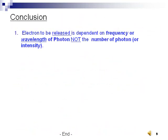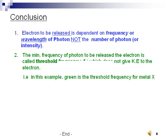This story concludes that: 1. Electron to be released is dependent on frequency or wavelength of photon, not the number of photons. 2. The minimum frequency of photon to release the electron is called threshold frequency f₀ which does not give kinetic energy to the electron.